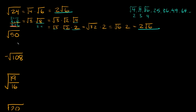Now let's try the square root of 50. We could break it down as 5 times 10, but we can also say 25 times 2. We break it down into the square root of 25 times the square root of 2, because 25 is a perfect square equal to 5. So this equals 5 times the square root of 2.